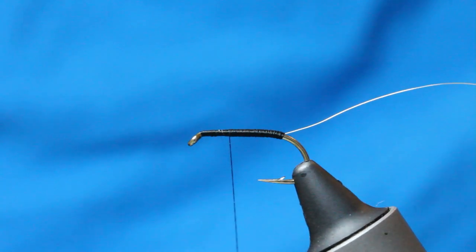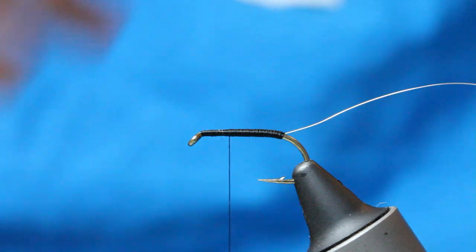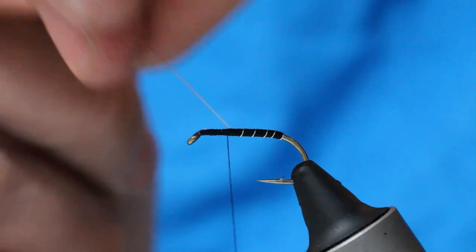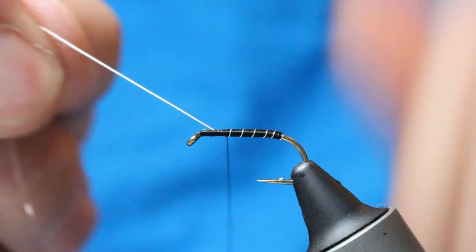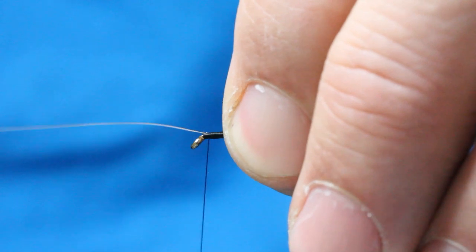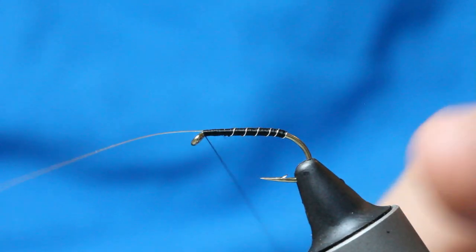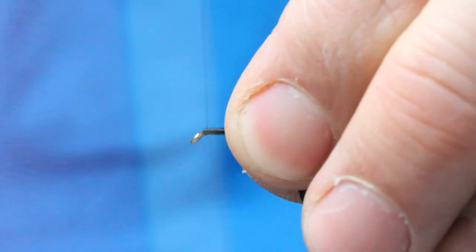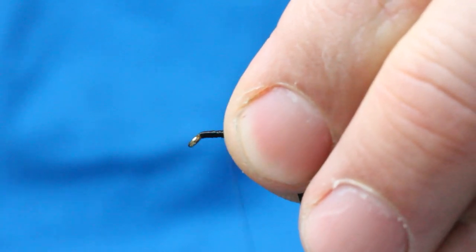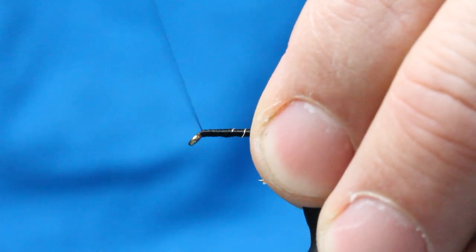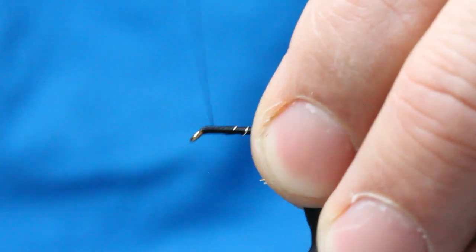Stopping at the thorax there, so I'm now going to come up with quite open wraps. One, two, three, four, five is enough. Lock that in and massage to the hook shank and bring your thread right up to the eye, and then twizzle them off. A couple of turns of thread just to build this thorax up, just a little bit, not too much.